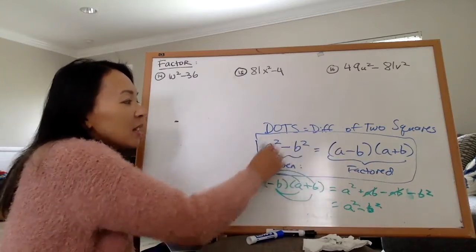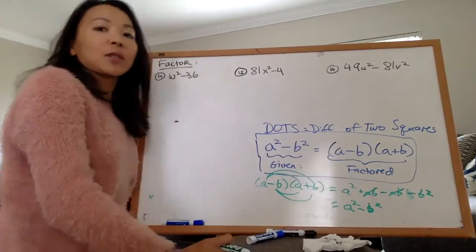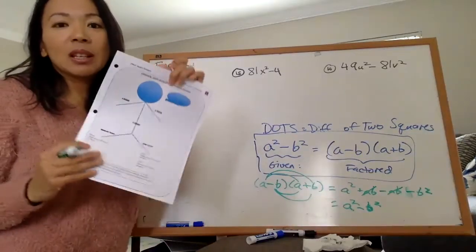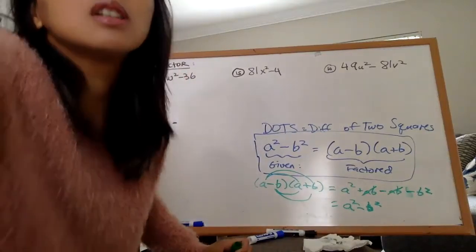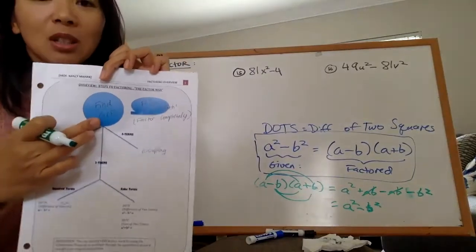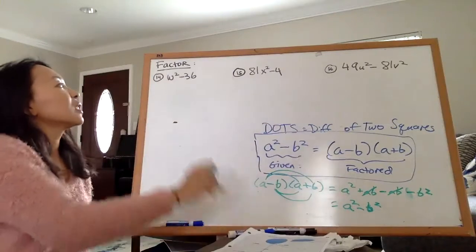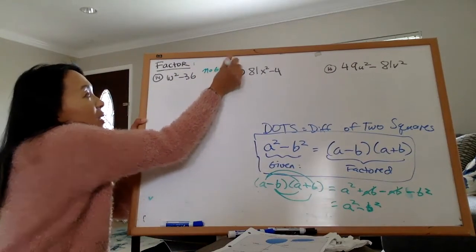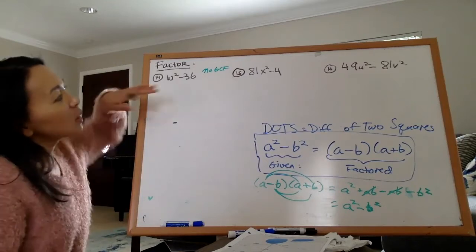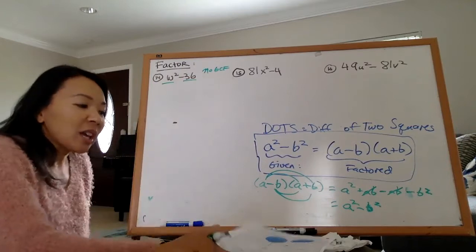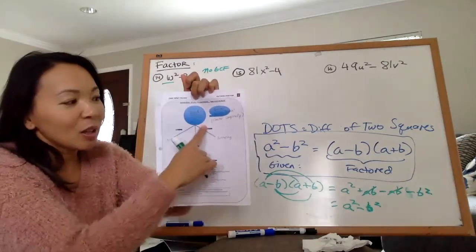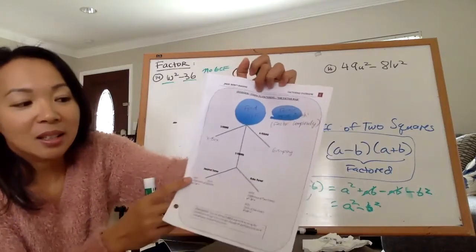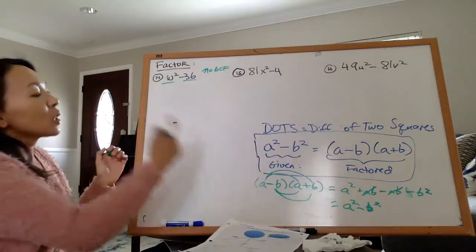Let's look at the first problem: w² − 36. The first thing I ask myself is: is there a GCF? Do w² and 36 have anything in common? No, they don't — so no GCF. But that doesn't mean we stop. There are two terms, so I ask myself: do I FOIL? No. Do I group? No. With two terms, I check: is it DOTS, DOTC, or SOTC?